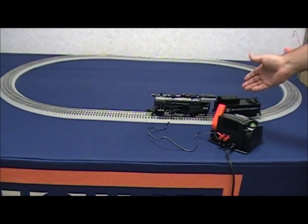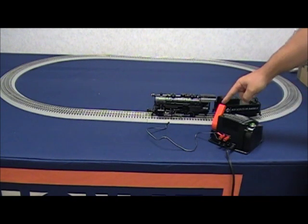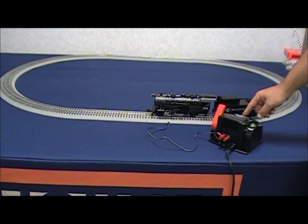Pressing direction again takes it out of reverse into neutral. While the power is applied and the train is in neutral, I can trigger the whistle by pressing the whistle button.